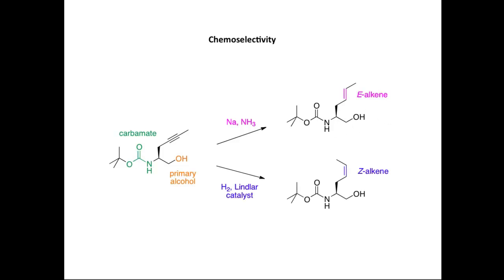If we react the alkyne with hydrogen and Lindlar's catalyst, we get a similar chemoselective transformation. It's only the alkyne that's reduced. And in this case, it's converted into a Z-alkene.